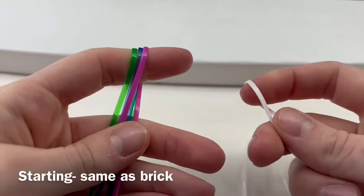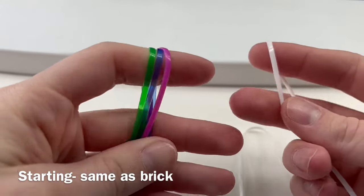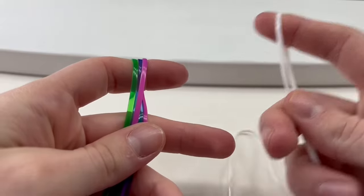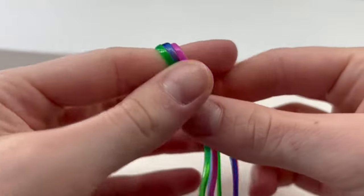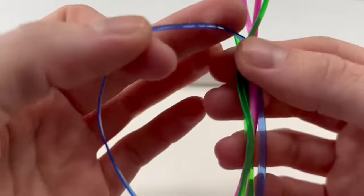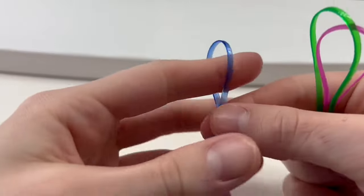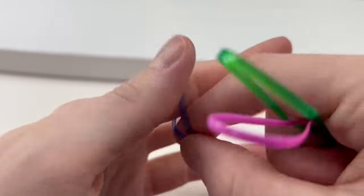To start this project you're going to need three short pieces of gimp or boondoggle and one longer strand. I recommend one and a half times the length. And you're just going to take your first strand, find the center, and place the center on your index finger.